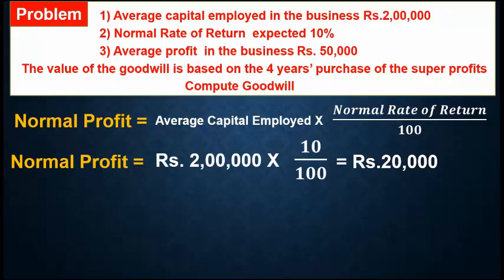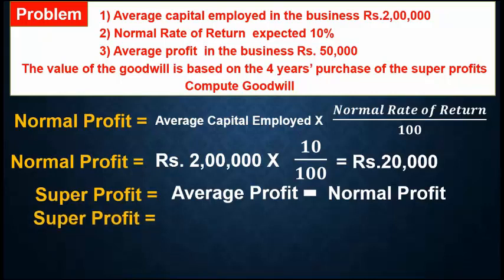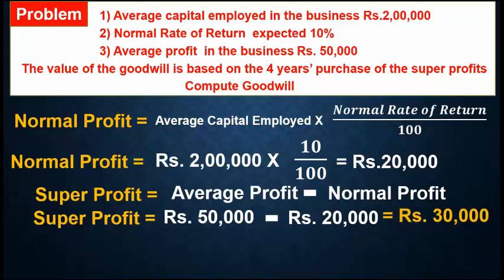Now calculate super profit. Formula: Average profit − Normal profit. Average profit given in the problem is rupees 50,000. Normal profit just calculated is rupees 20,000. So: 50,000 − 20,000 = rupees 30,000. Rupees 30,000 is the super profit.